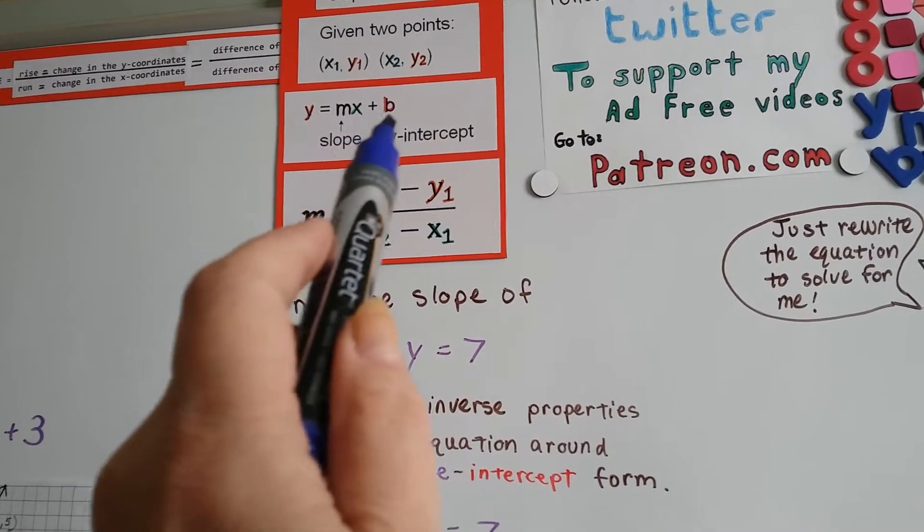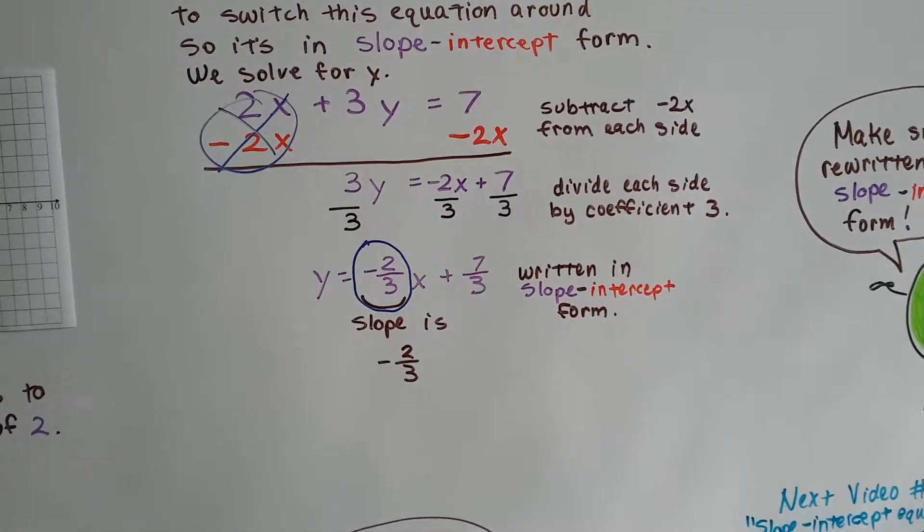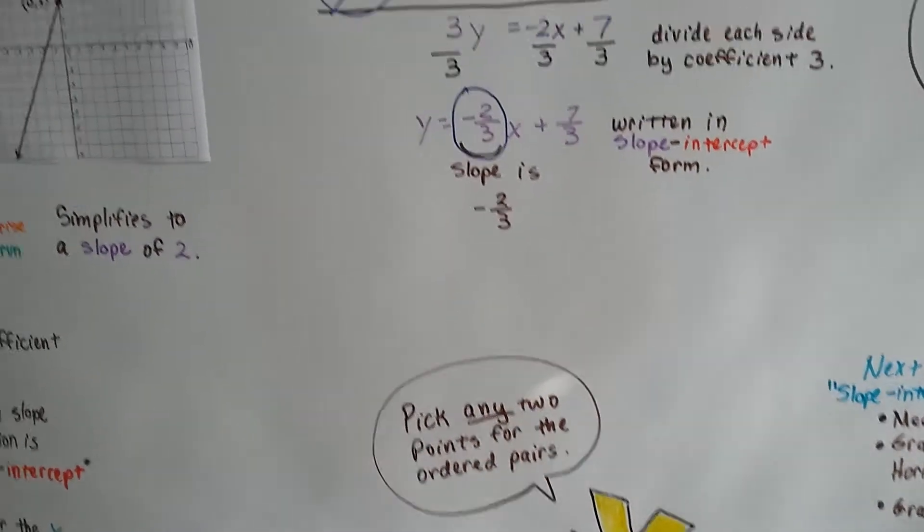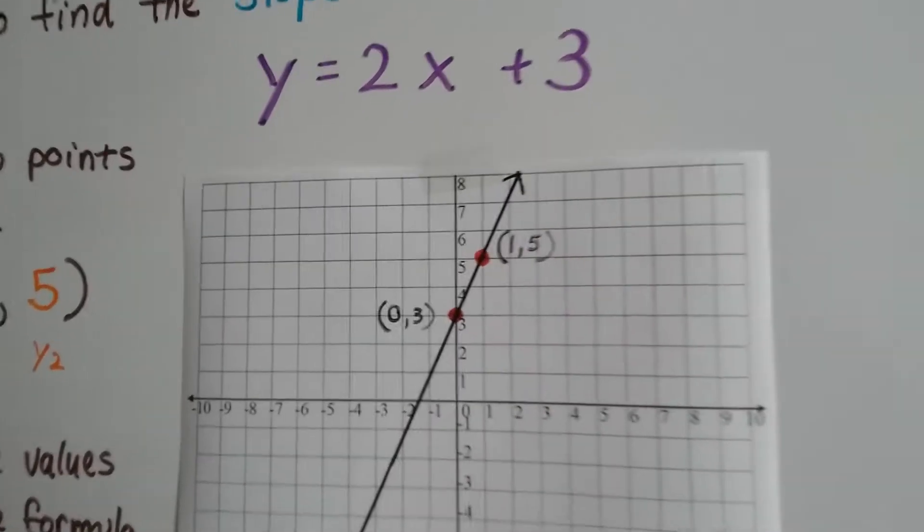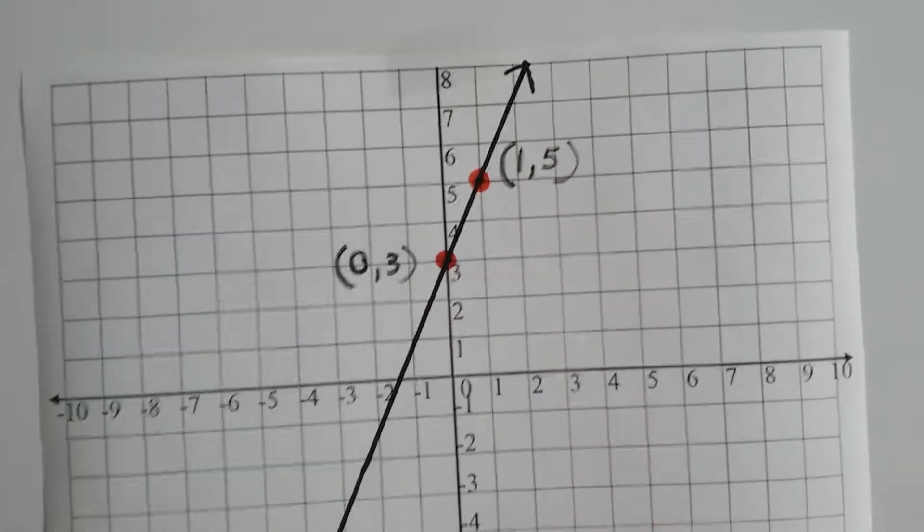We need to make sure that it's written in that form in order to be in slope-intercept form. Then we know that that's the slope. And we can just pick any two points for the ordered pairs. We didn't have to pick these two points. We could have picked any points that actually crossed perfectly on the crosshairs here.